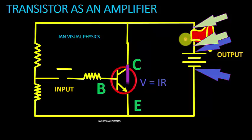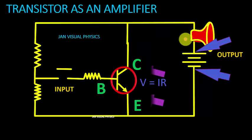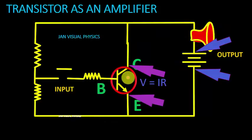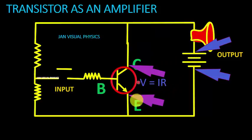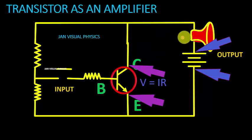When the transistor is switched off, that is when the resistance of the transistor is high, the maximum portion of this voltage drops across the transistor and a very small voltage drops across our load.